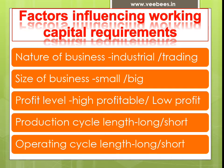Then there is production cycle length, which means the time taken to convert raw materials into finished goods. If a concern has a long production cycle, it takes more time for converting raw materials into finished goods, and they require more amount of working capital. A shorter production cycle firm takes lesser time to convert raw materials into finished goods, so they require a lesser amount of working capital investment.